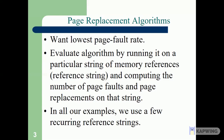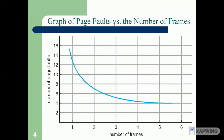We evaluate an algorithm by running it on a particular string of memory references and computing the number of page faults on that string. We use a recurring reference string in our examples. Looking at the graph of page faults versus number of frames: when the number of frames is less, the number of page faults increases. If the frame size is six, the number of page faults is four; if the frame size is one, it is 14 or 15.